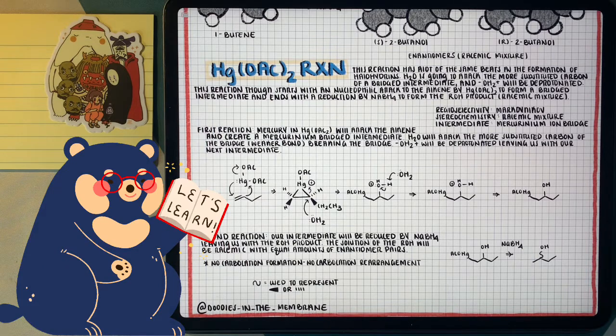Now our second step, which is the reduction step, is going to be NaBH4 reducing that mercury acetate attachment to leave us with the Markovnikov alcohol product. And this product forms a racemic mixture. So if the molecule is chiral, we will have an even amount of S and R enantiomers.